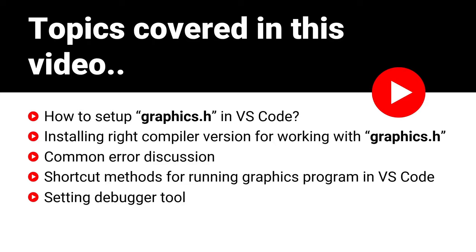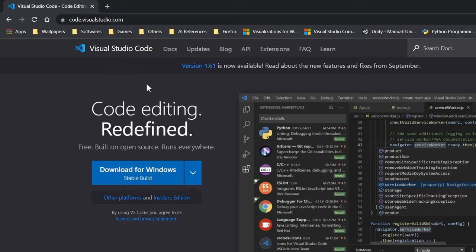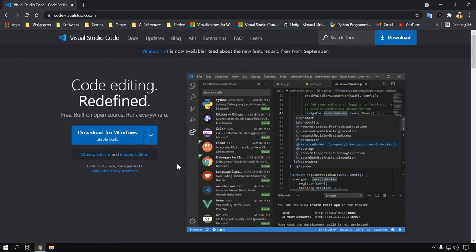The first two are especially for beginners and those who just want to run a graphics program, and the third one is especially for those who want to create a project using the Graphics.h library. I will also explain some common errors you can face when setting up Graphics.h in VS Code and how to solve them. I am assuming you have already installed Visual Studio Code. If not, go to the official website, download and install it — I have mentioned the link in the description.